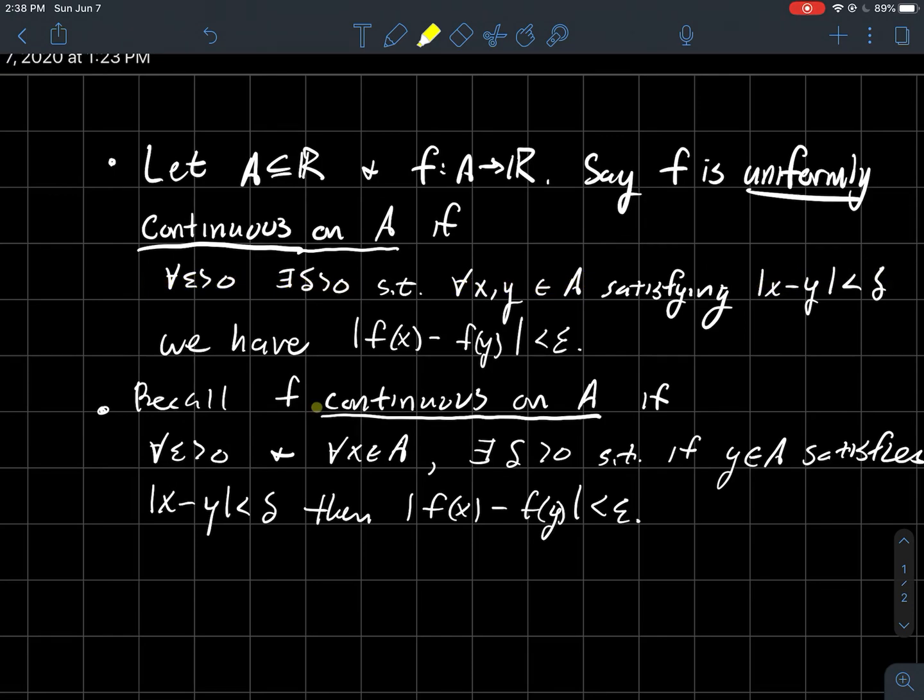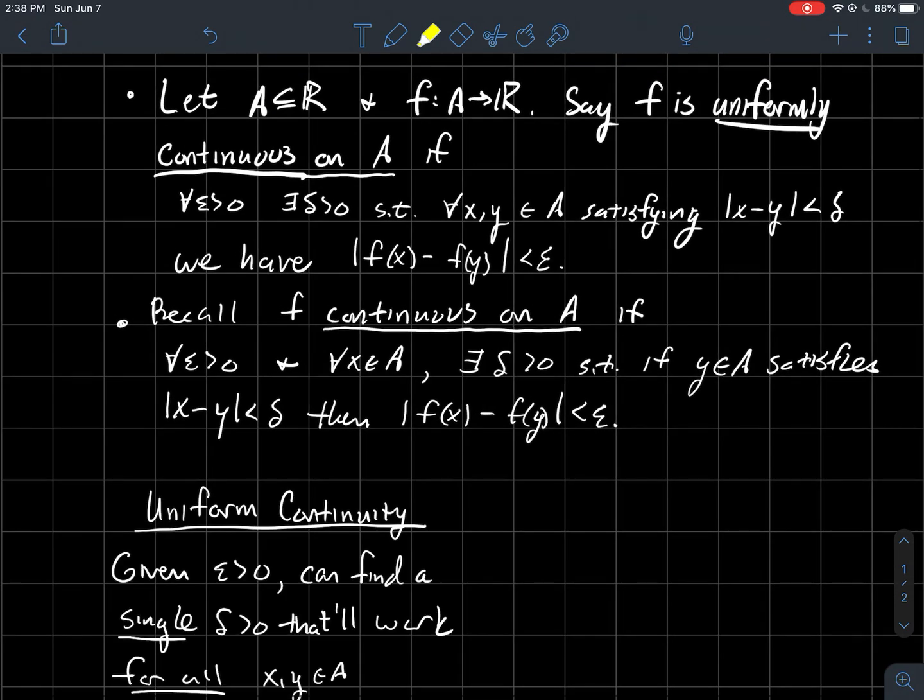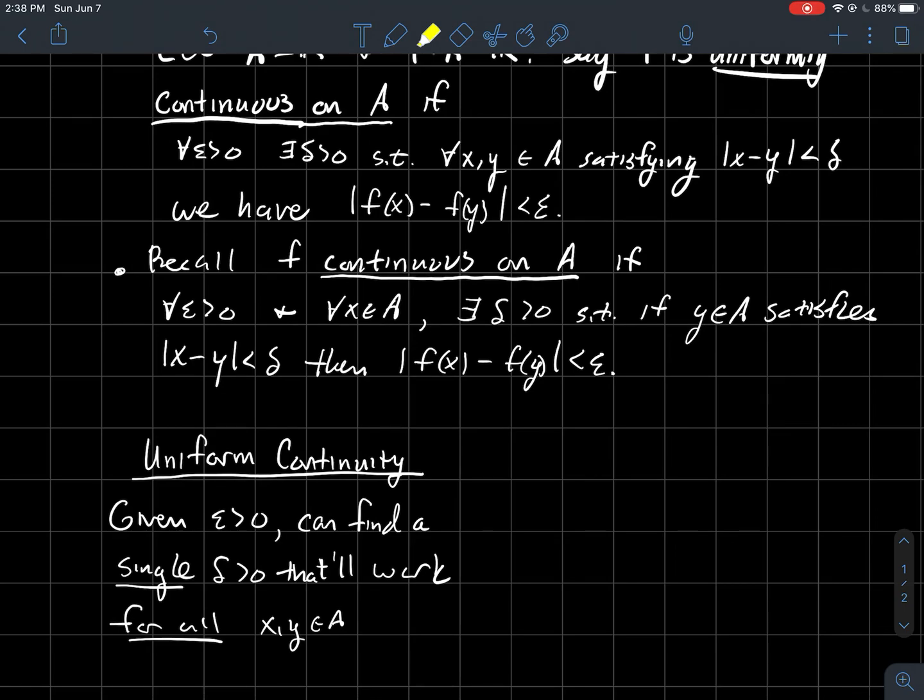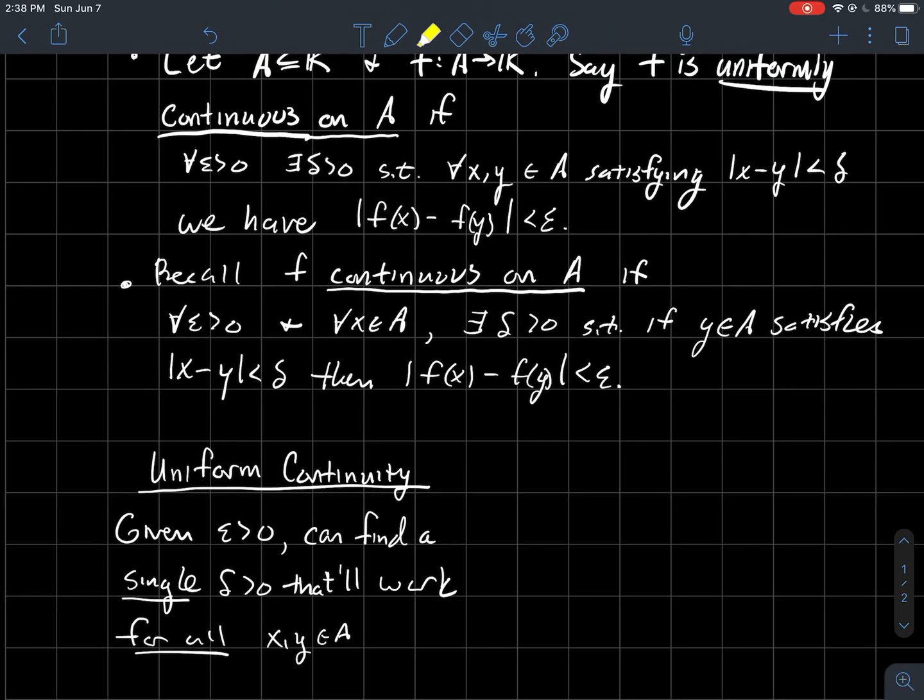Whereas, if you look at the definition down here of just continuous, the order of the symbol says, for each epsilon bigger than zero and for each point in your domain, you should be able to find a delta such that if y is within delta of that particular x that we've started with. So in particular, in a nutshell, uniform continuity, given an epsilon, there should be maybe a single delta that'll work for all x and y in your domain. So what do I mean by that'll work? That's a little bit fishy. So such that if x and y are within delta of each other, then the output should be within epsilon of each other.